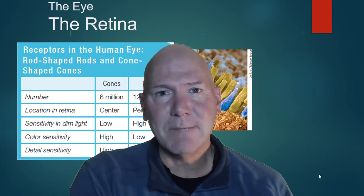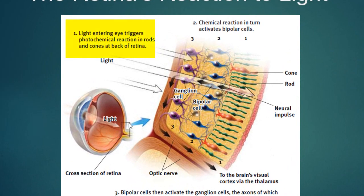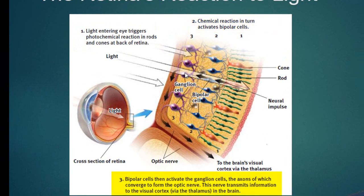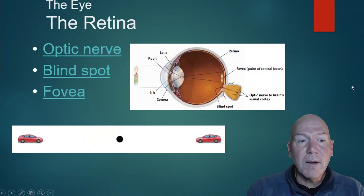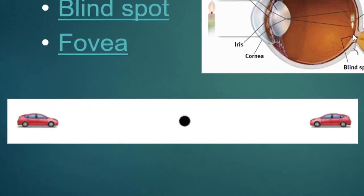Here's how the visual signal pathway works. Light passes through the eye to the retina, hitting the rods and cones at the back. This sends a chemical reaction to bipolar cells, which then activate the ganglion cells, which send signals down the optic nerve to the brain's visual cortex. The optic nerve is the blind spot — there are no sense receptors there, so when something is focused on that area you won't see anything.